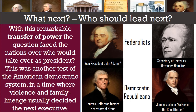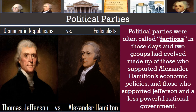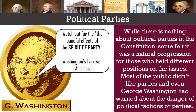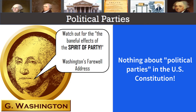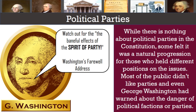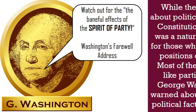With this remarkable transfer of power, the question faced the nation over who would take over as president — another test of the American democratic system, in a time where violence and family lineage usually decided the next executive. By now, political parties were in full effect. Two groups had evolved: those who supported Alexander Hamilton's economic policies, the Federalists, and those who supported Jefferson and a less powerful national government, the Democratic-Republicans. While there is nothing about political parties in the Constitution, some felt it was a natural progression. Even George Washington had warned about the danger of political factions, exclaiming the need to watch out for the baneful effects of the spirit of party.